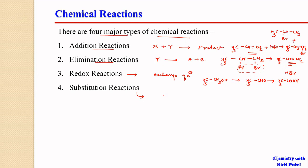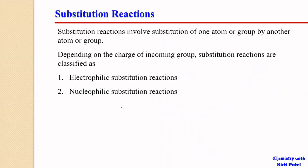The fourth type is a substitution reaction, in which there is an exchange of a group of atoms. For example, we have CH3CH2X reacting with Y such that we get CH3CH2Y — here X is getting substituted by Y. Substitution reactions involve substitution of one atom or group of atoms by another atom or group of atoms. Our topic of interest for today is the substitution reaction.